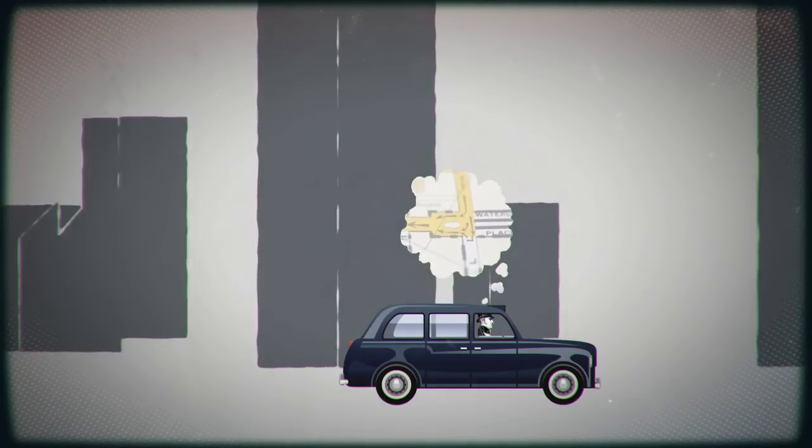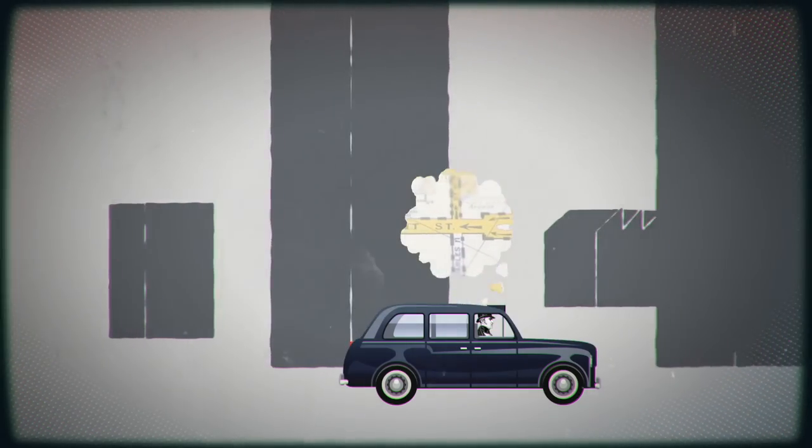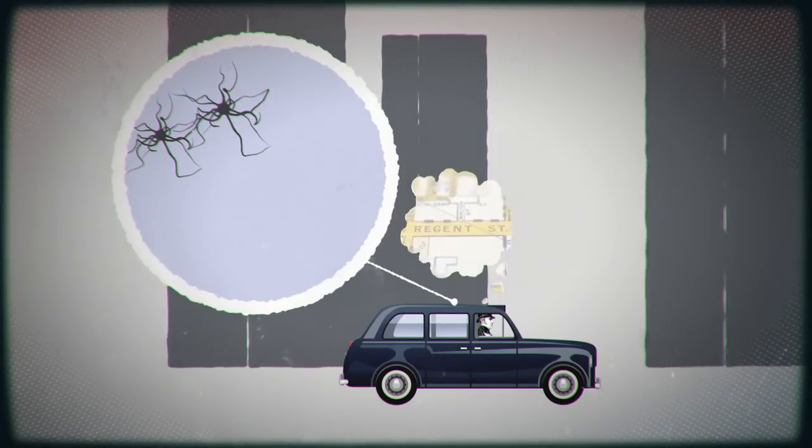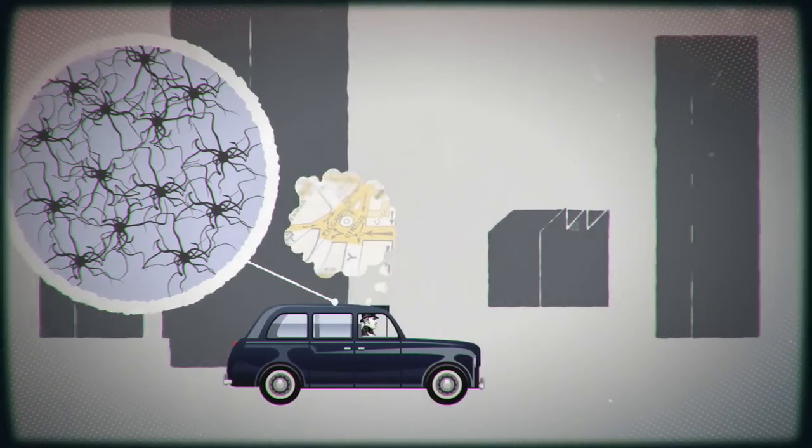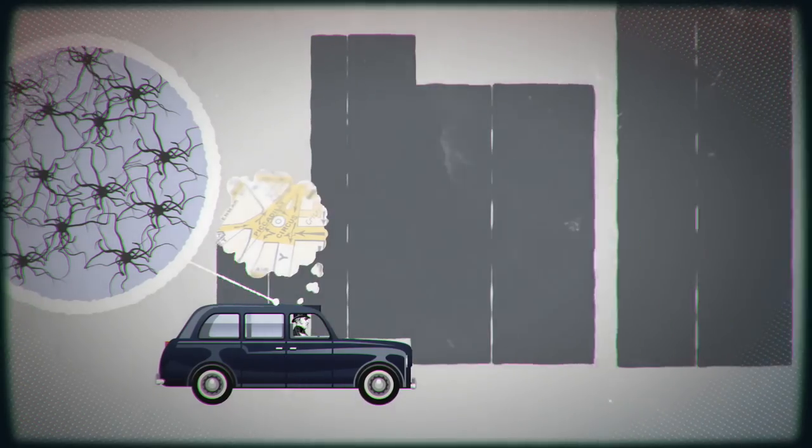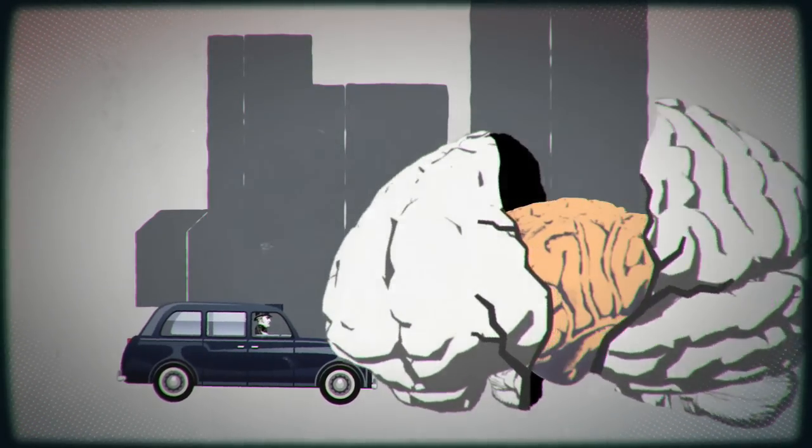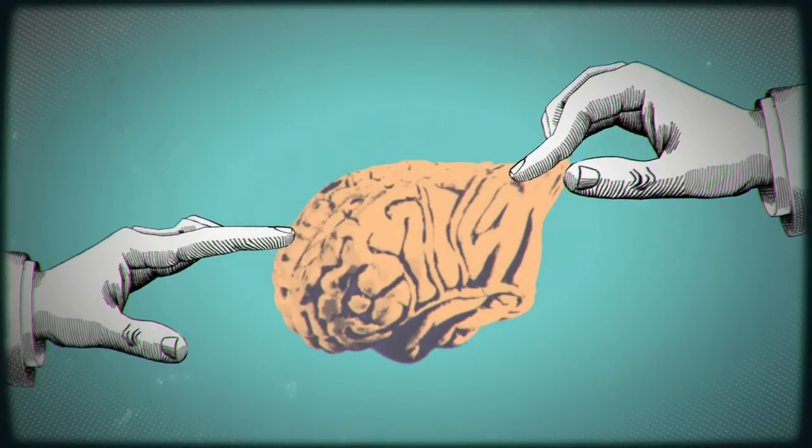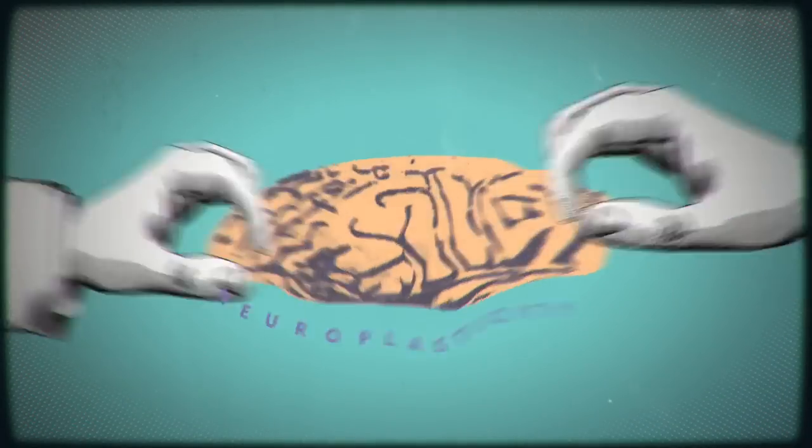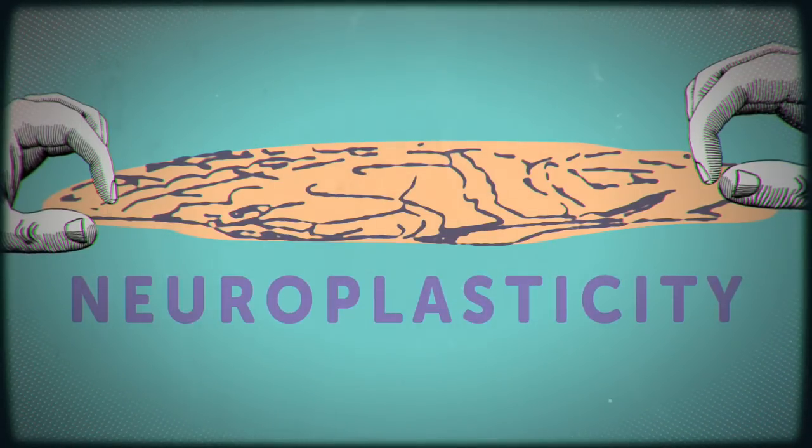In memorising and using their mental map of London, the cabbie's brains adapted and changed, creating more synaptic connections. So it turns out the brain isn't like concrete, but more like putty or plastic, able to adapt to our demands. Scientists call this adaptability neuroplasticity.